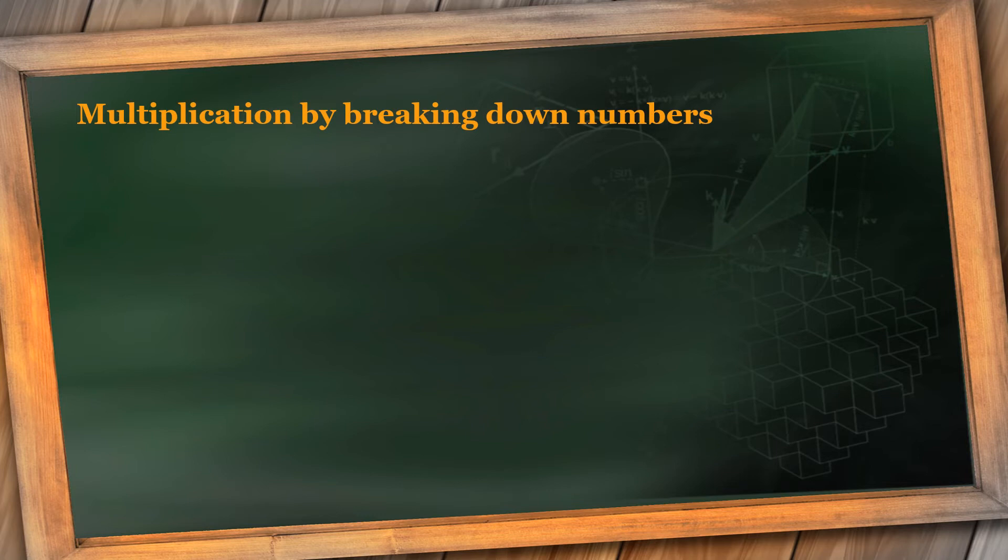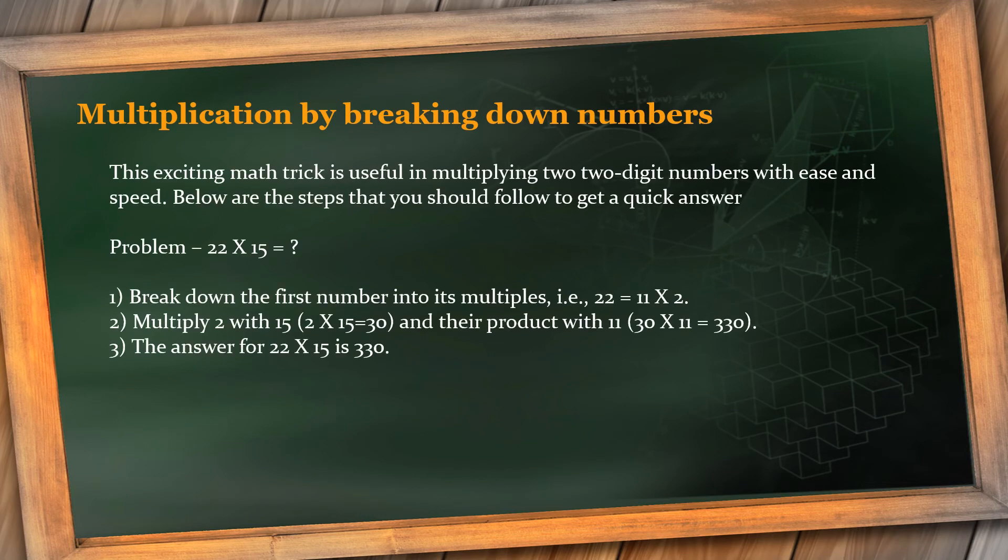Multiplication by breaking down numbers. Now what is this breaking down numbers? Let's see that. This exciting math trick is useful in multiplying two two-digit numbers with ease and speed. Below are the steps that you should follow to get a quick answer. So here I have an example: 22 multiplied by 15. 22 being a bigger number and difficult to multiply, I'll take up that number to break down into its multiples. How can I break it down? I can use 11 multiplied by 2, the product for which is 22.